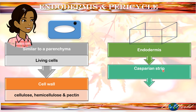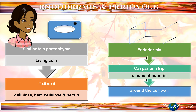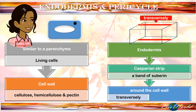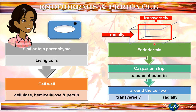The casparian strip is made up of a waxy material called suberin. However, the cell wall is not completely covered by the suberin. Instead, the suberin just goes around the cell wall transversely and radially. Since this suberin is not covering the cell wall completely, water is still permeable. Therefore, the endodermis remains a living cell.